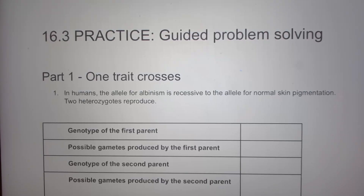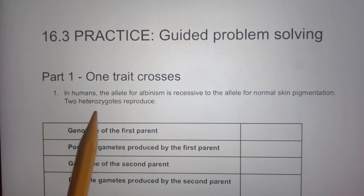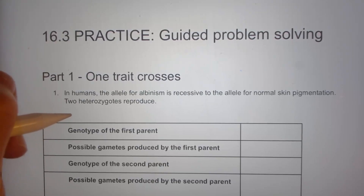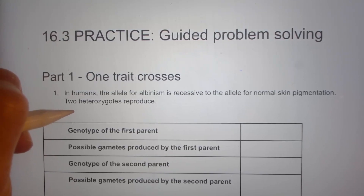Practice problems: guided problem solving, part one — one trait crosses. In humans, the allele for albinism is recessive to the allele for normal skin pigmentation. Two heterozygotes reproduce. So albinism is recessive.